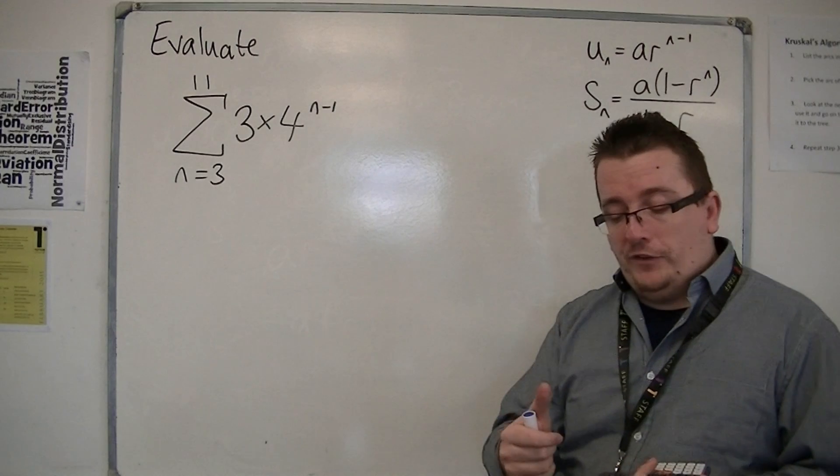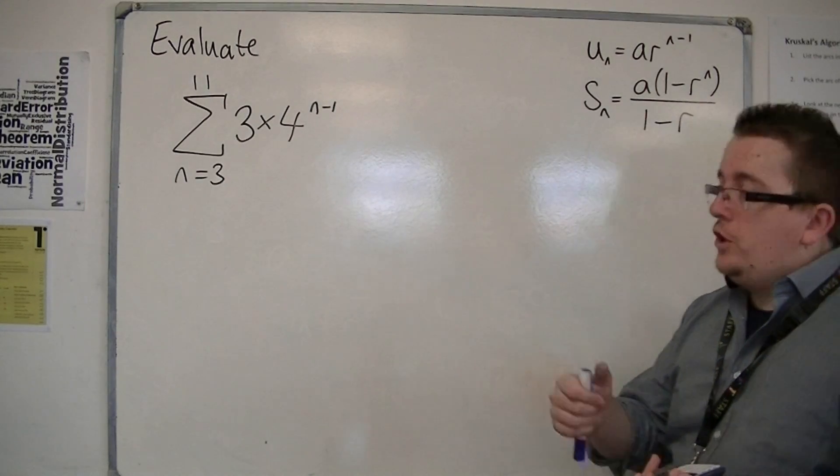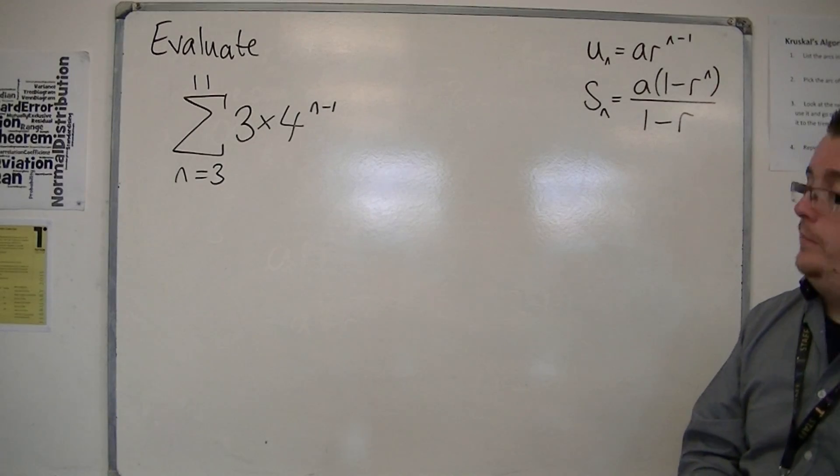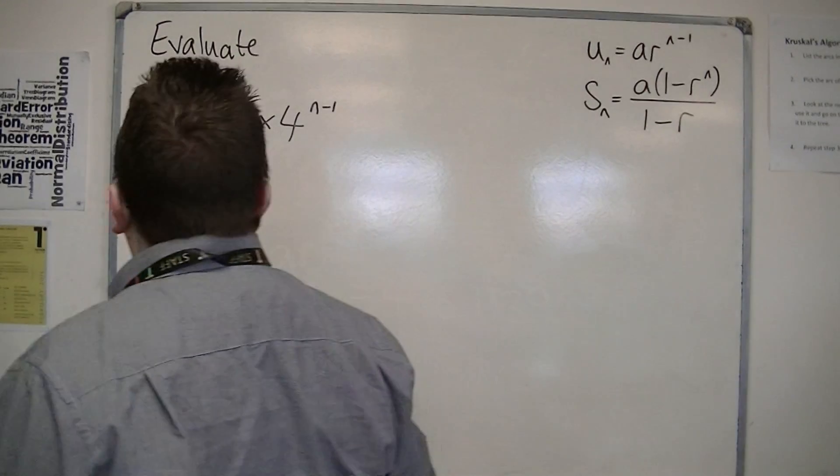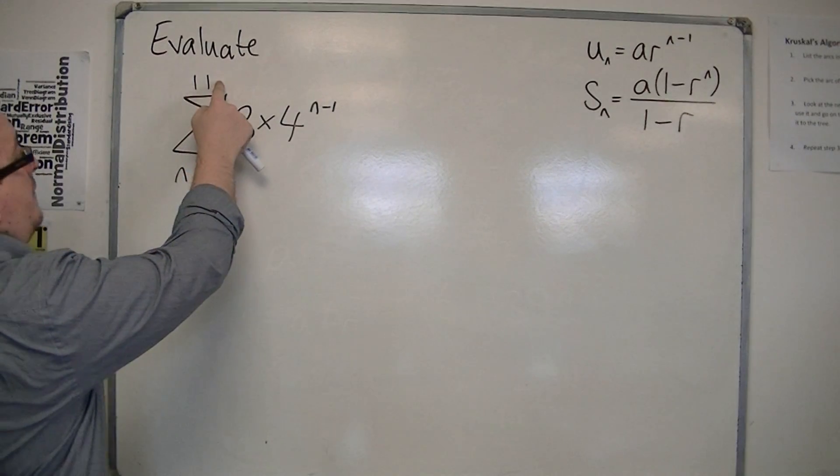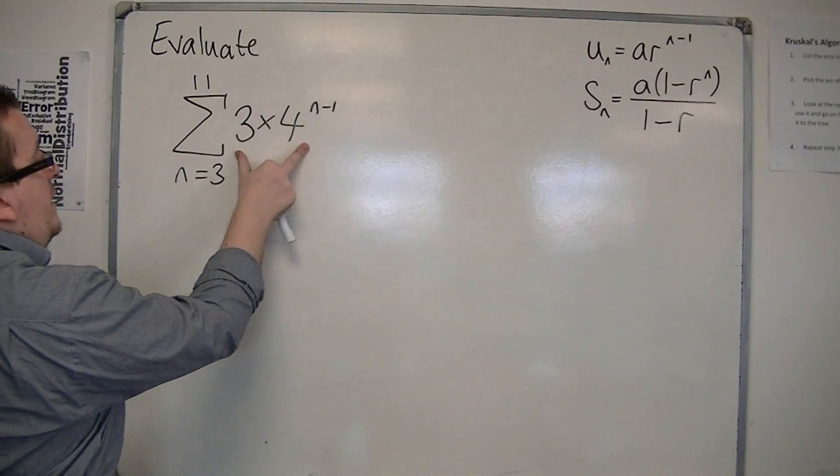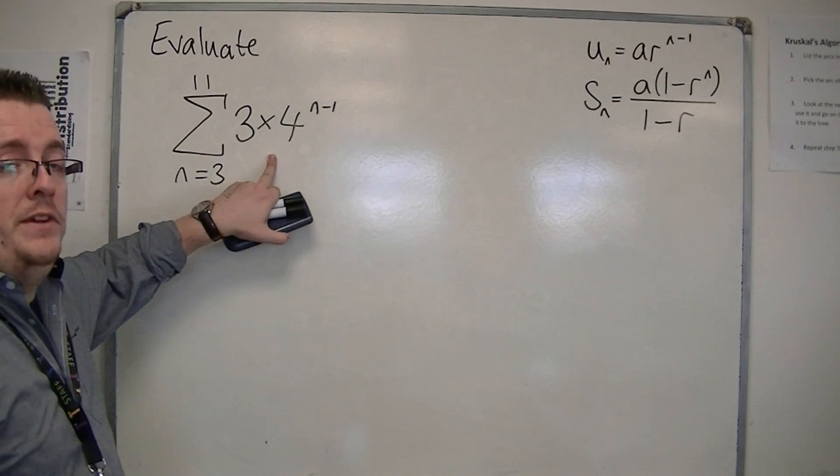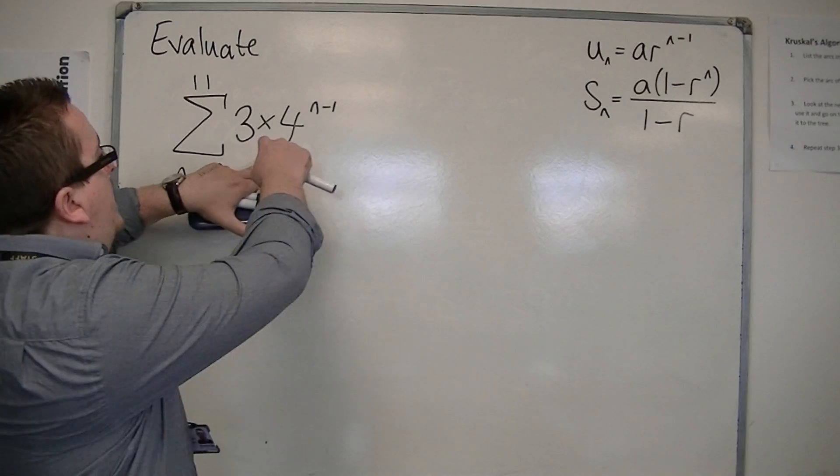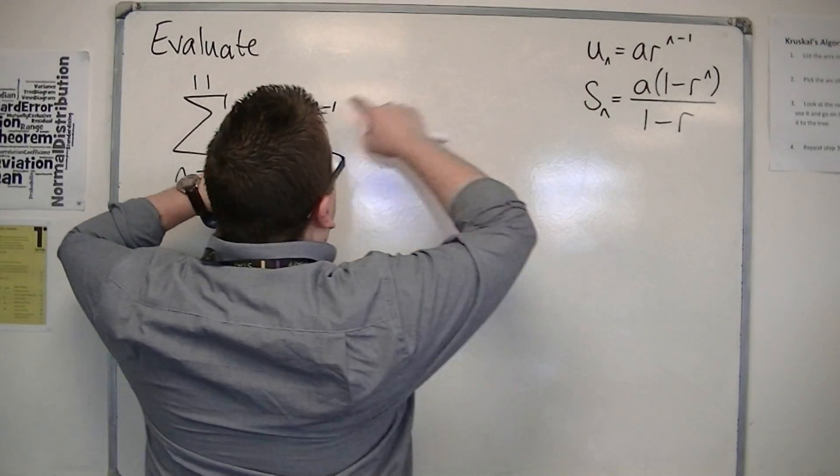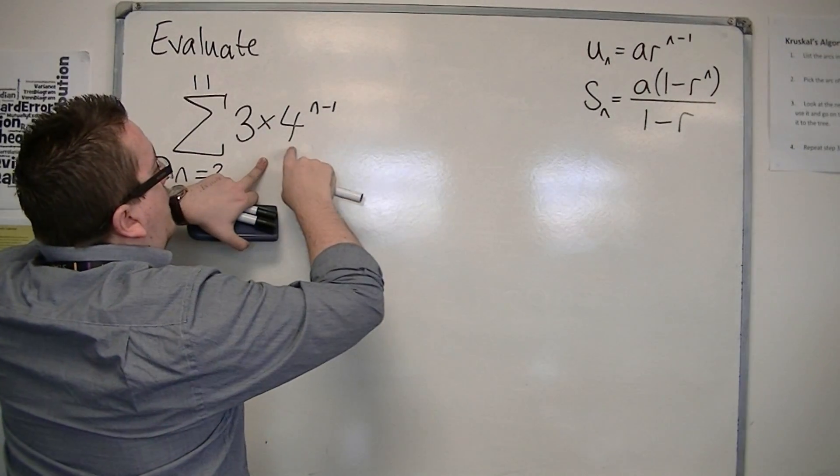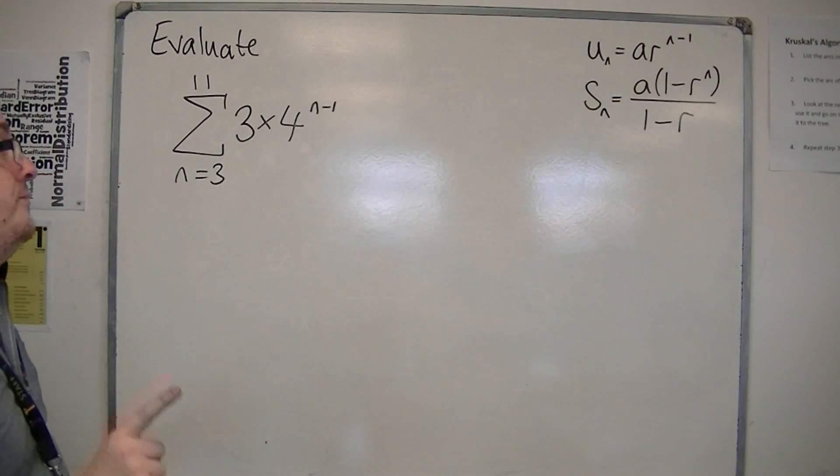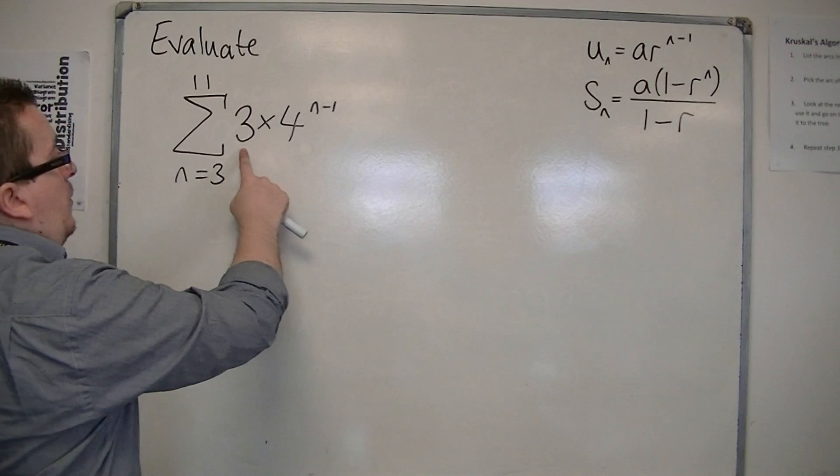I'm going to need the first term a, the common ratio r, and I need to know n, the number of terms. This is telling me that I'm summing from the third term to the eleventh term, where this is un, so this is my nth term. If I refer back from this to this, you can kind of see the similarity, ar to the n minus one. However, don't get confused.